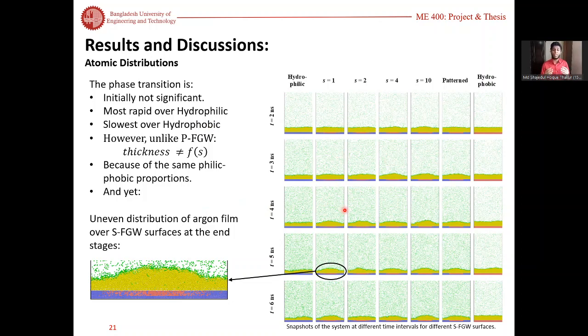However, the thickness of the argon film here does not vary with the value of s, the function parameter. This is because the function parameter does not vary the proportion of the hydrophilic and hydrophobic atoms on the surface. Yet we do see some uneven distribution of the argon atoms over the sFGW surface.